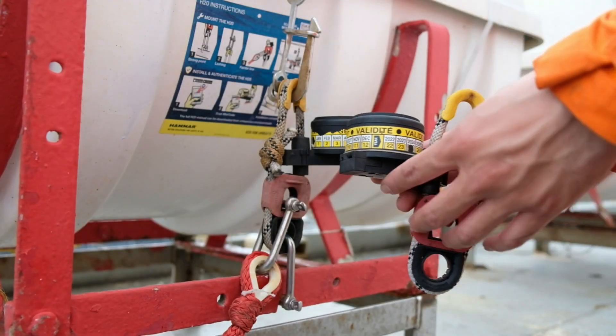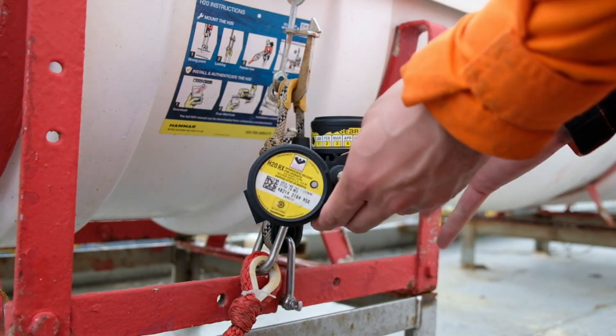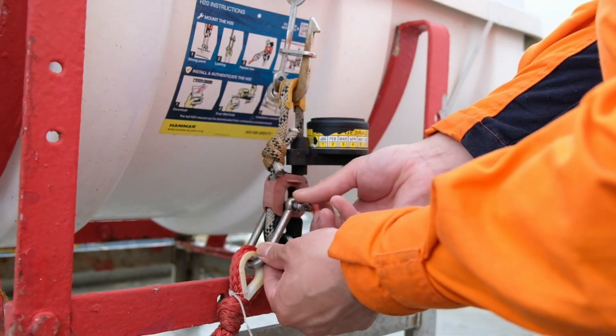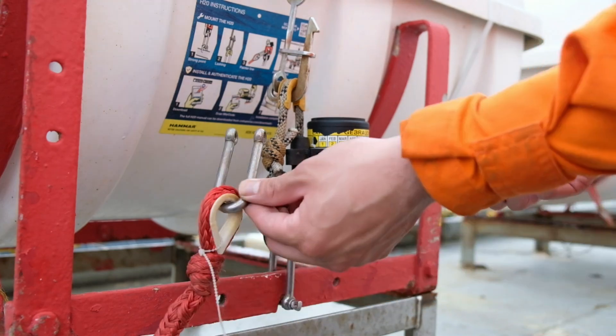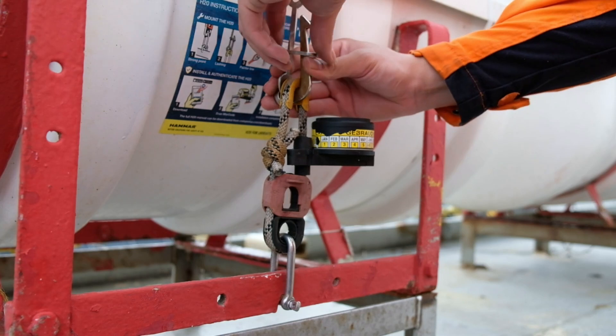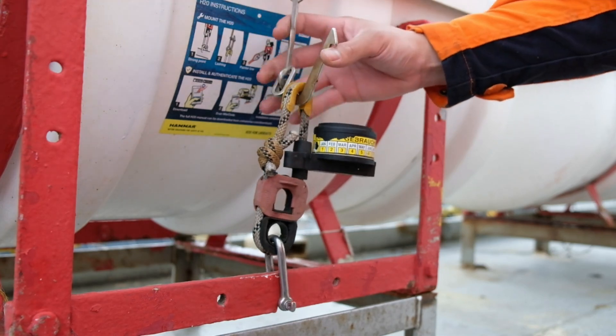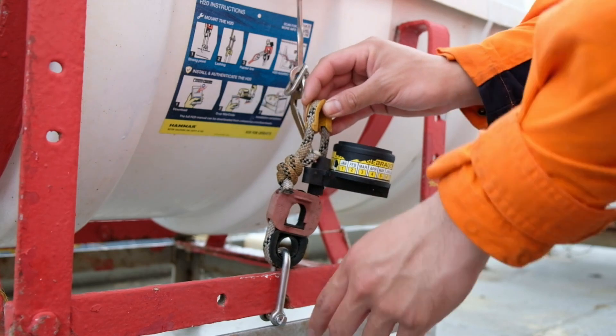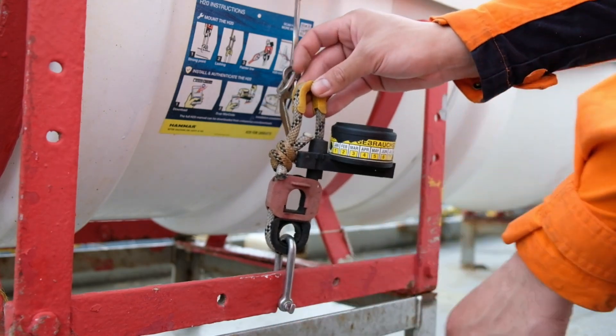So we have here an old HRU due for replacement. First, we remove the painter line connecting the raft from the HRU. This relieves intrusions in replacing the unit. We then remove the release hook or what it's termed as the pelican hook or slip hook. This releases the tension generating from the straps and the HRU itself.